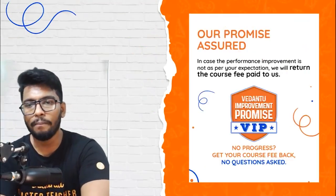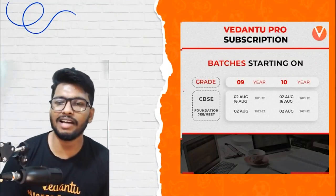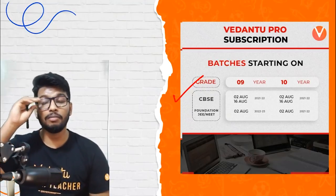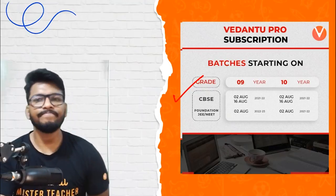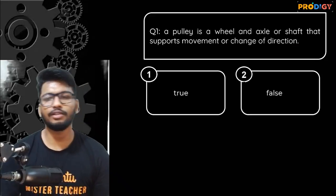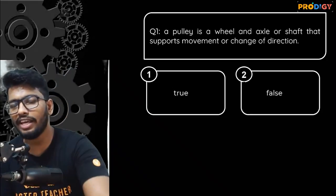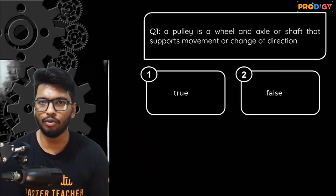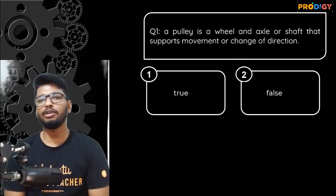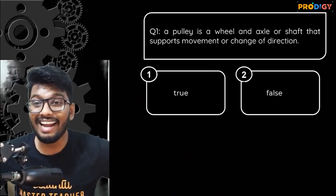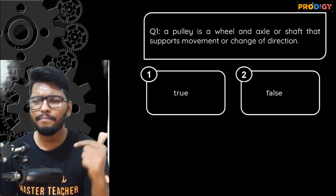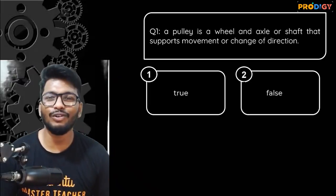Now let's solve some quiz questions. New batches are starting: the CBSE batch on 2nd and 16th August, and the foundation batch for JEE and NEET on 2nd August for both 9th and 10th standard. Here's the first question: 'A pulley is a wheel and axle or shaft that supports movement or change in direction.' Is this statement true or false? The answer is true — a pulley has a wheel and axle, and it supports movement or changes direction.